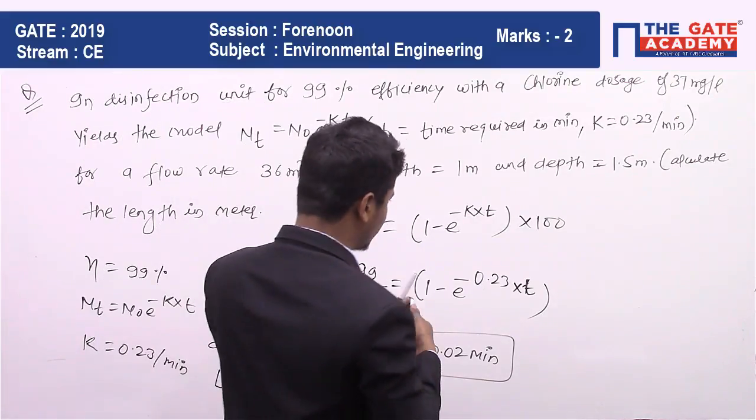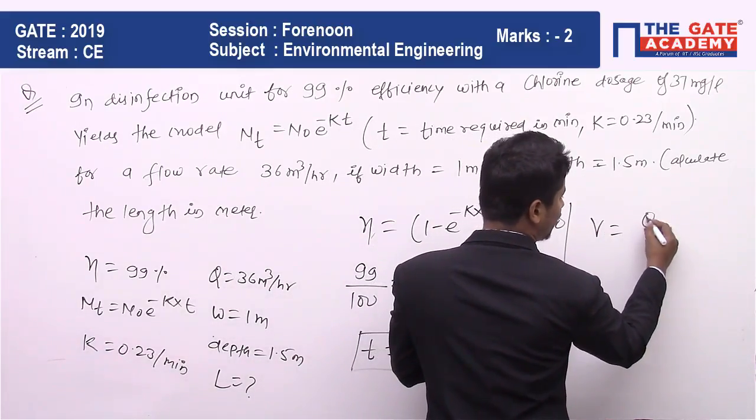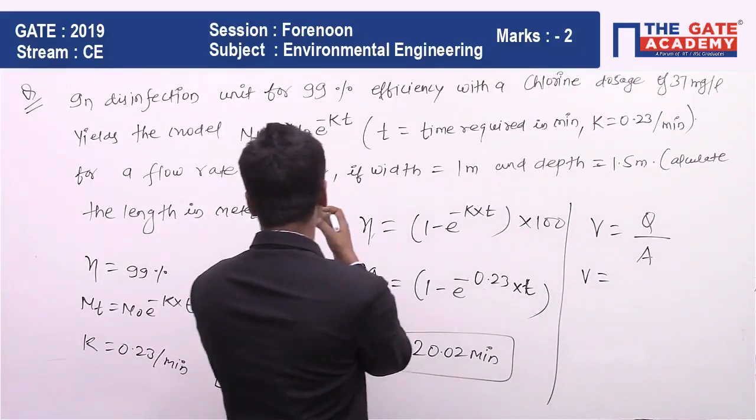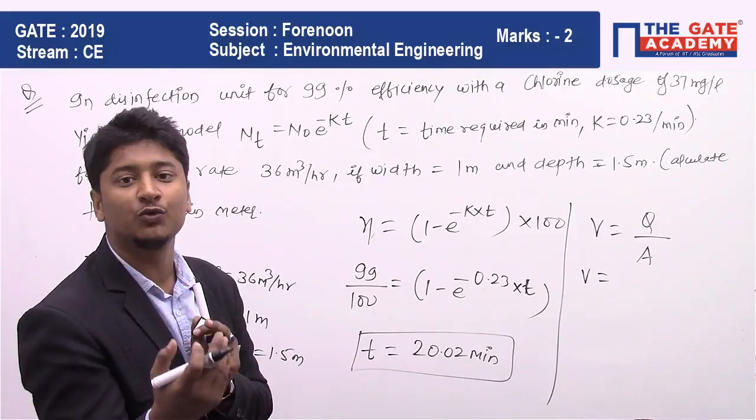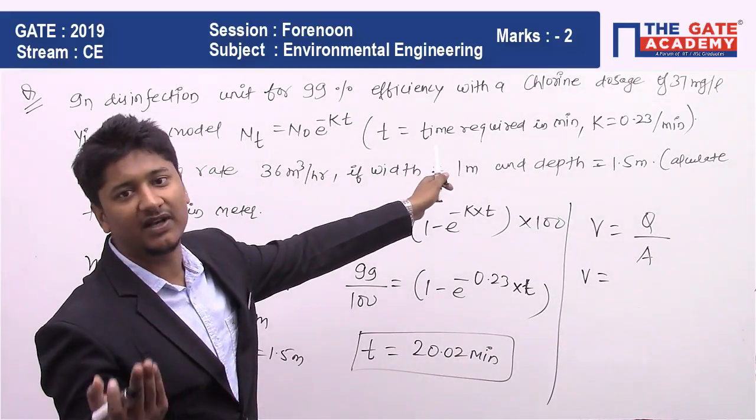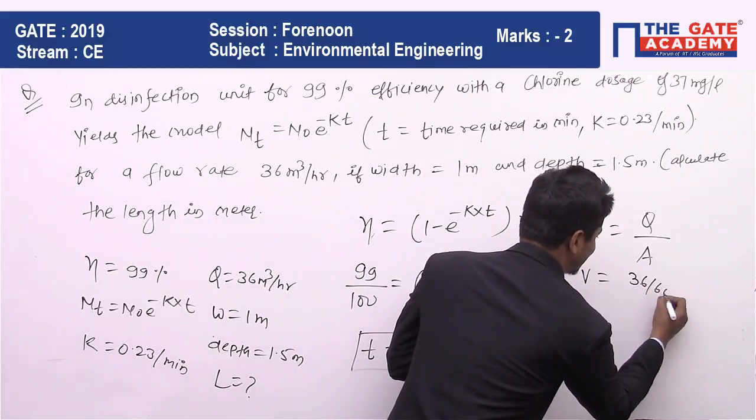So next, what we have to do is to find the velocity. V is nothing but Q upon area. So V: Q is 36 meter cube per hour, that you have to convert to 36 meter cube per minute because whatever data we are getting, time is in minutes only, so I am converting it by dividing by 60.